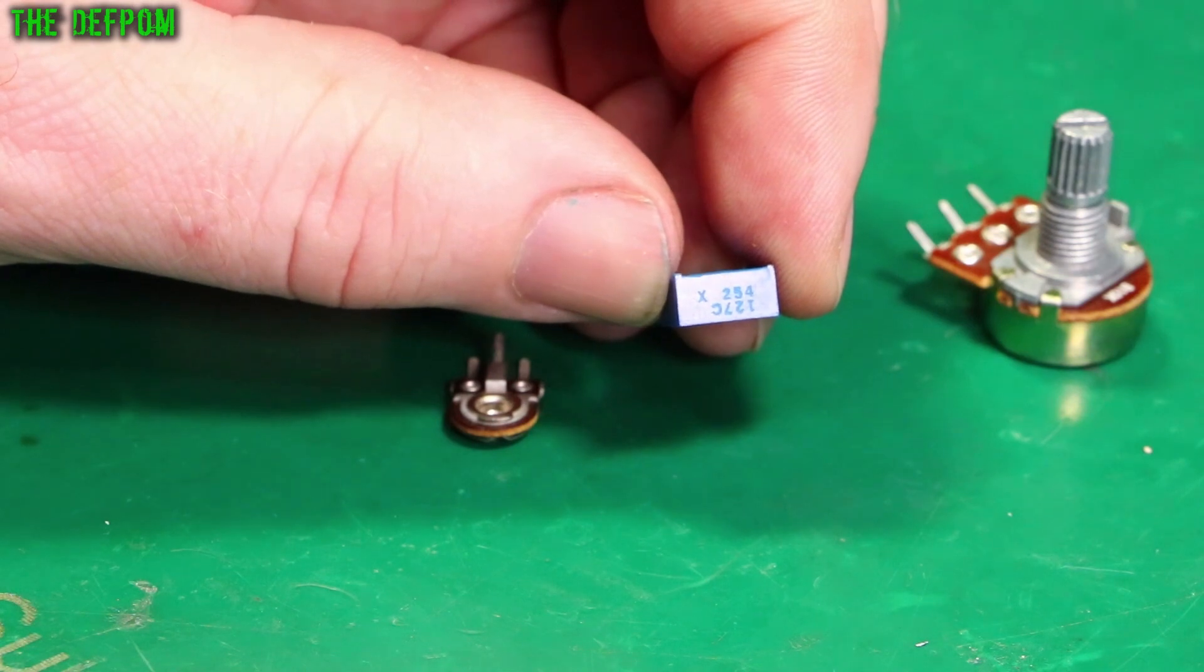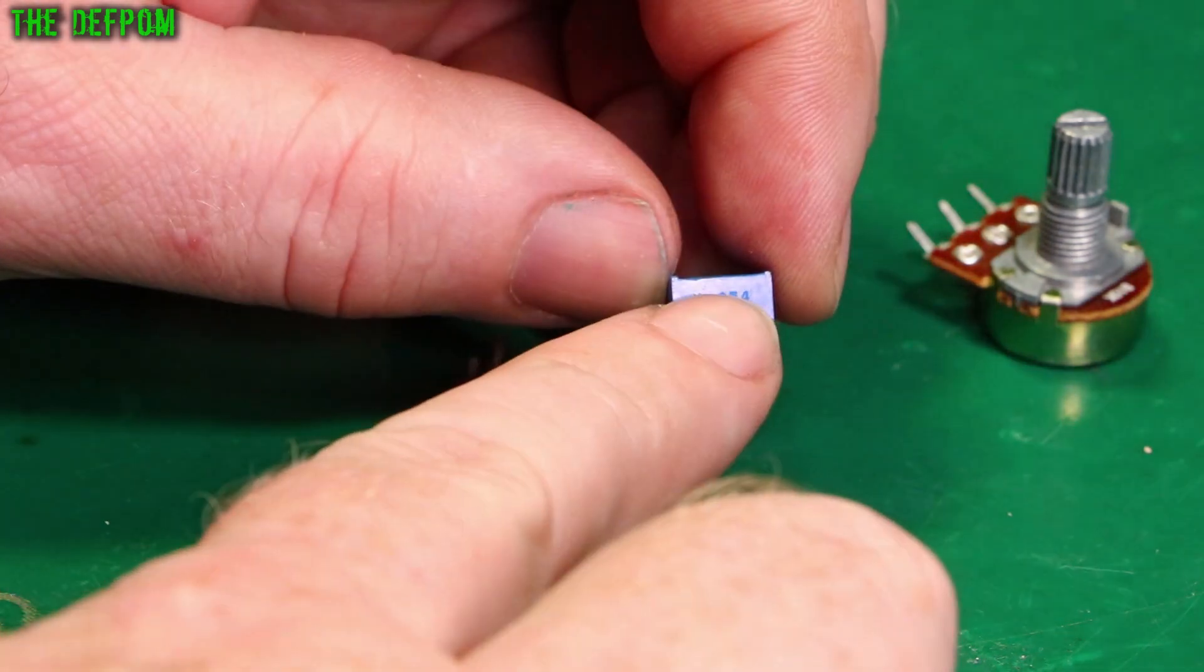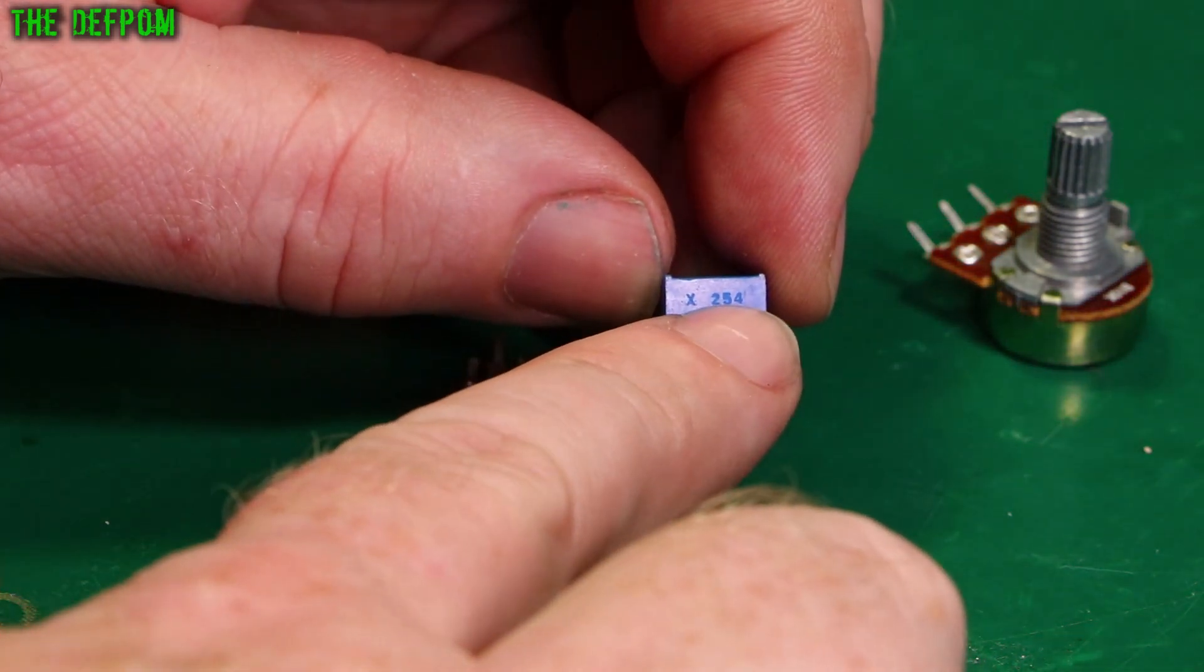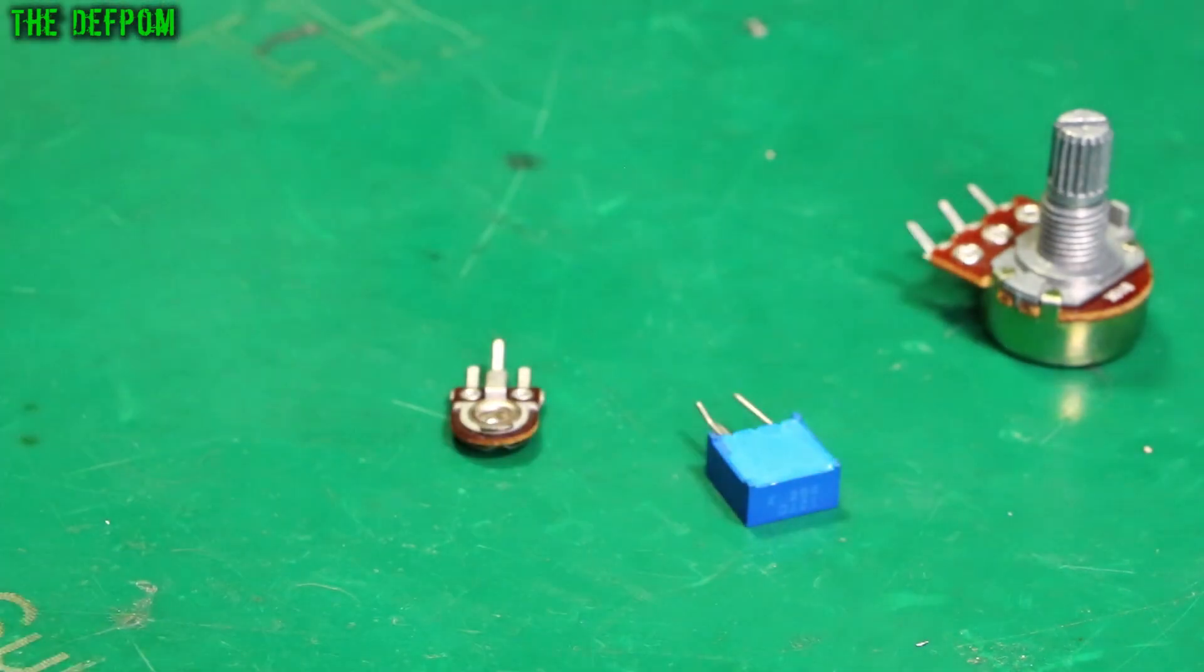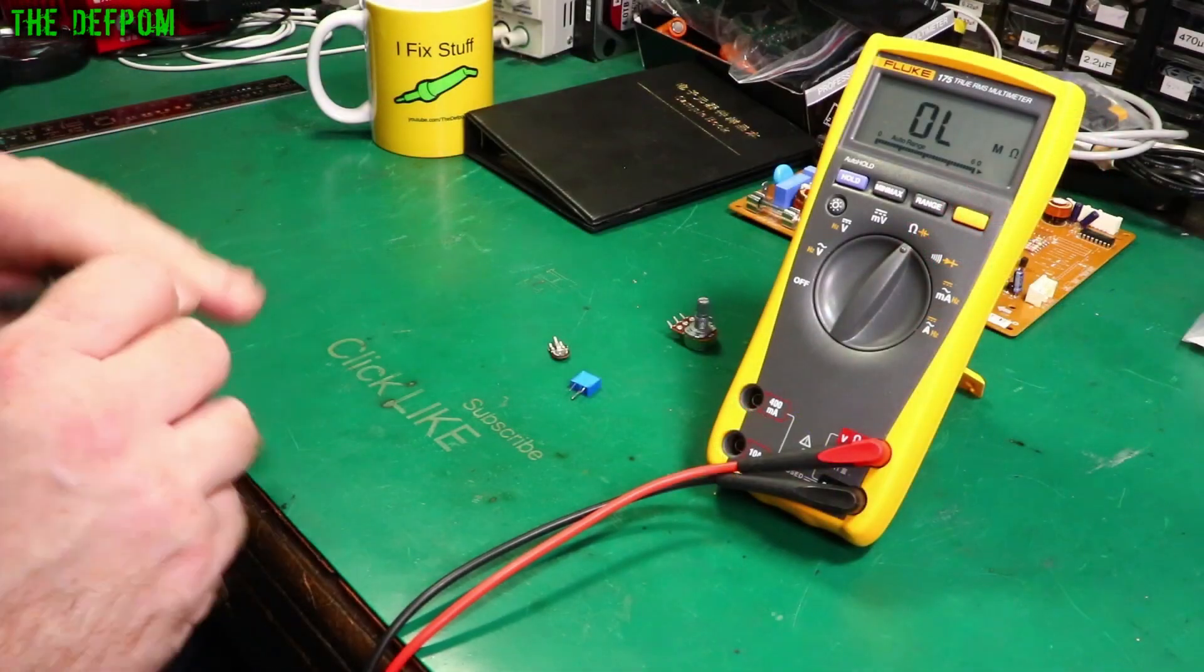That is the value. So 25 with four zeros which is what that means. So 254. Do you want to take a guess what value that is? Well let's find out.